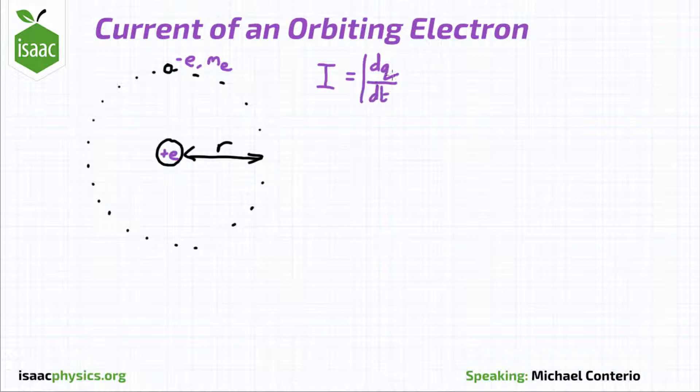Current is defined as the rate of charge passing a point. So for one orbit of the electron, the average current at a point is given by the charge on the electron e divided by the time for one rotation, capital T.